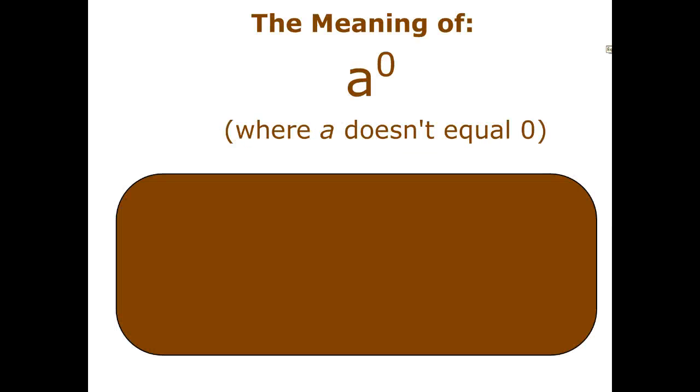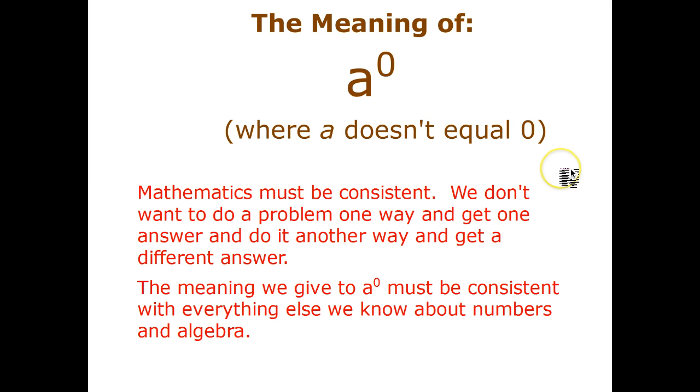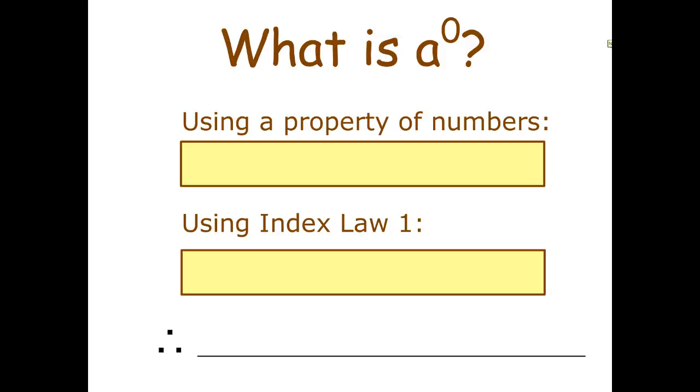Okay, let's have a look at what it means to raise something to the zero power. Now it doesn't really make sense under the current definition to talk about a to the zero because that's just saying I've got zero a's. And a squared means I've got two a's multiplied together. But how can I have zero a's multiplied together? Okay so what we're going to do is work on the fact that mathematics must be consistent. So whatever meaning we apply to a to the power of zero it has to be consistent with all of the other index laws and all of the other mathematics that we've learned. So let's see how we can do that using this idea of consistency.